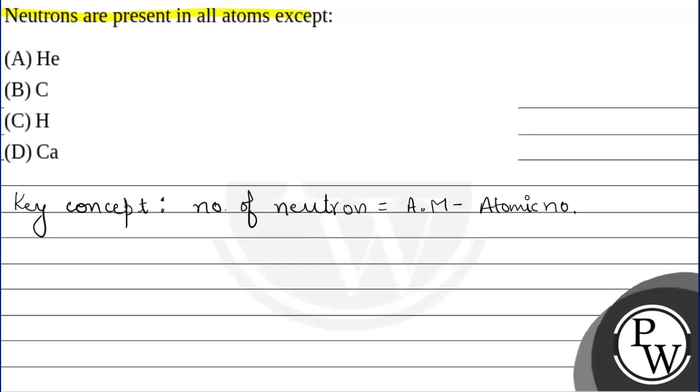So, agar hum baat karein Helium ki (if we talk about Helium), atomic mass is 4 minus atomic number is 2. It means 2 neutrons are there.